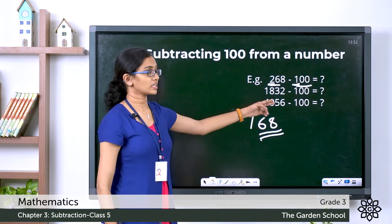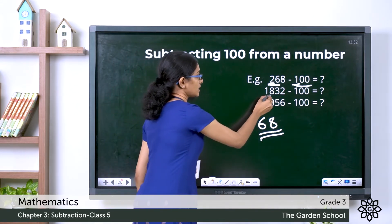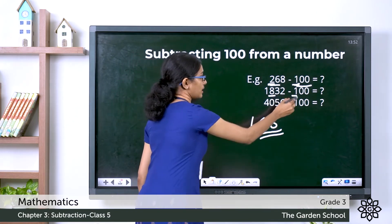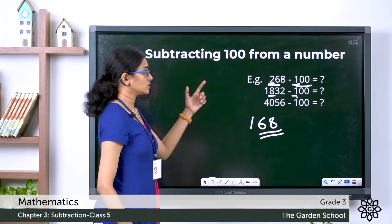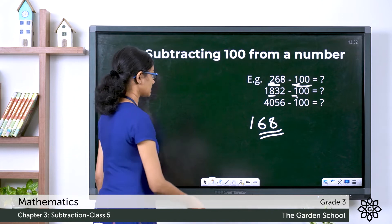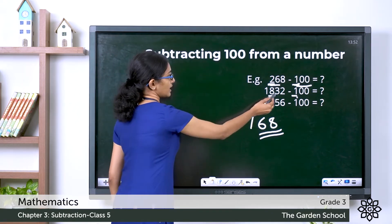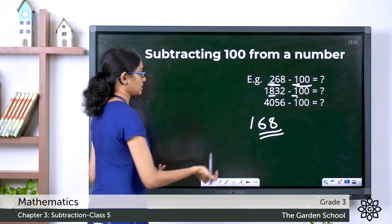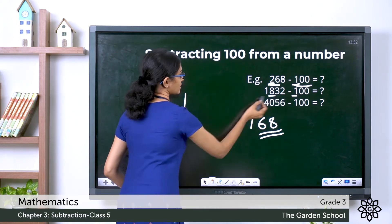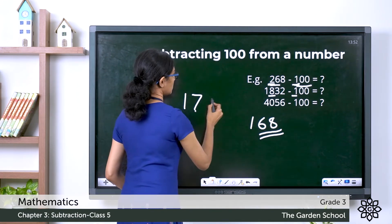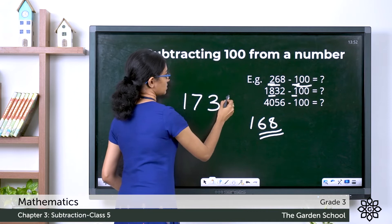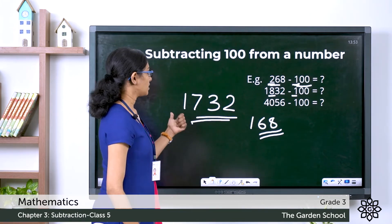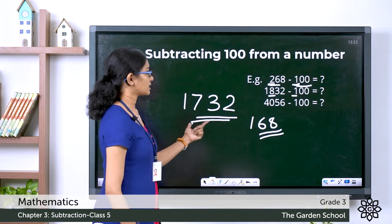What about 1832 minus 100? Here the hundreds digit is 8 and in the subtrahend it is 1. Since 8 is bigger, you can easily do 8 minus 1, and all the other digits remain unchanged. So it is 1, then 7, then 32. So 1832 minus 100 will be 1,732.